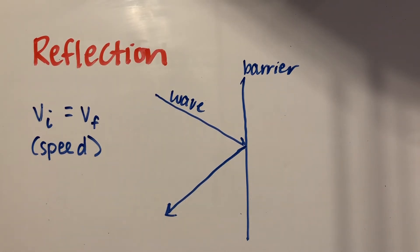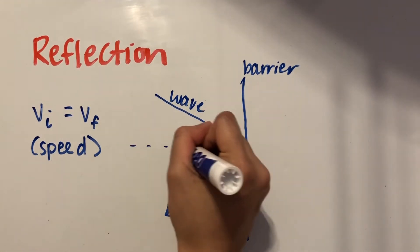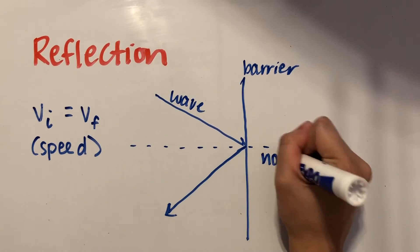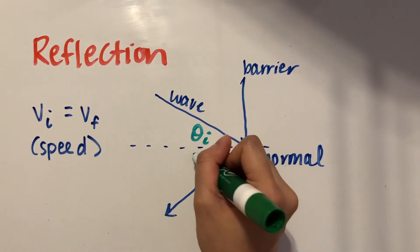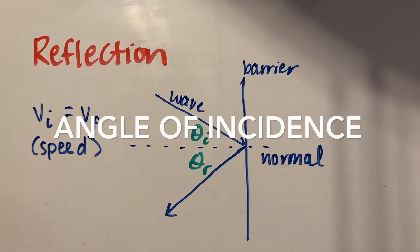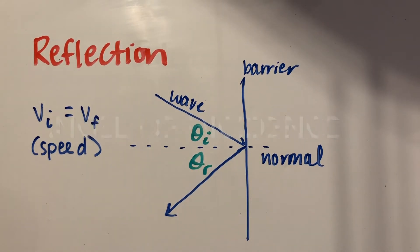The wave changes directions with respect to how it encountered that barrier. So an incoming wave ray hitting a barrier at an angle will also leave at a certain angle. The angle between the normal or perpendicular line and the incoming ray is called the angle of incidence. The angle between the normal and the reflected ray is called the angle of reflection.